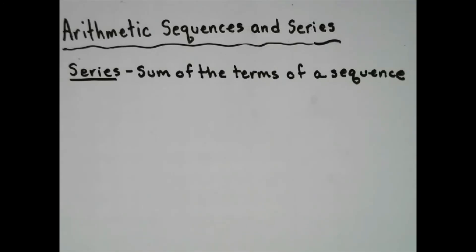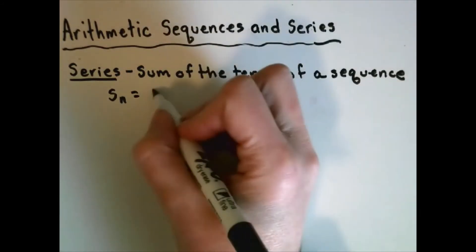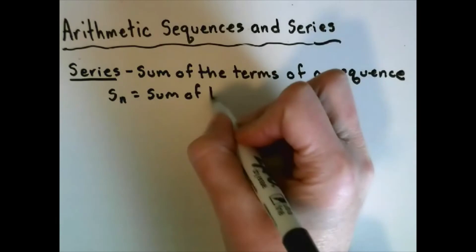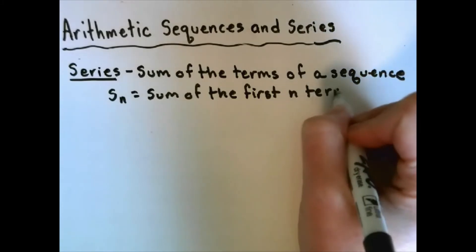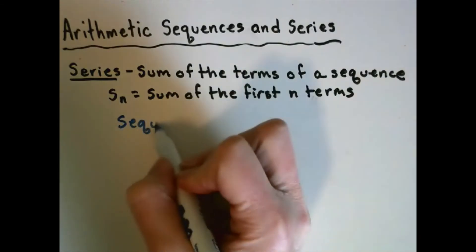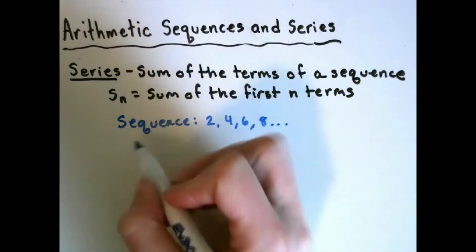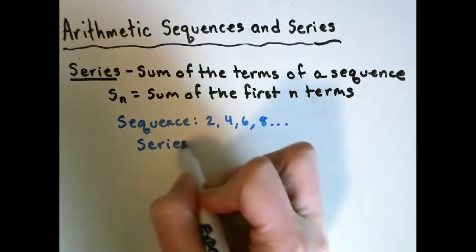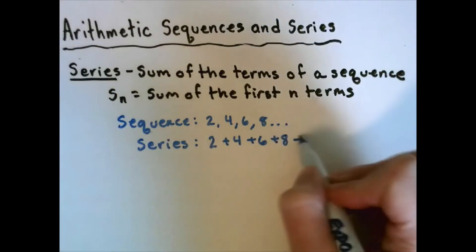Next we'll talk about series. Series are the sum of the terms of an arithmetic sequence. We use S_n to denote the sum of the first n terms. For example, the sequence 2, 4, 6, 8, … has a corresponding series 2 + 4 + 6 + 8 + …